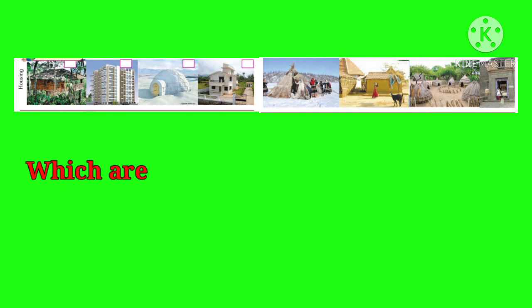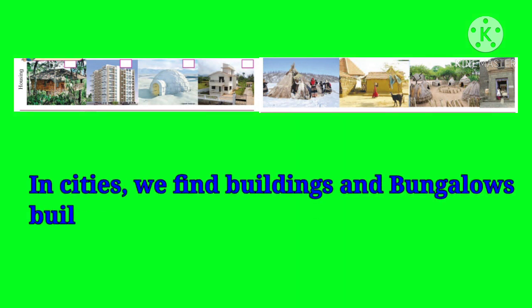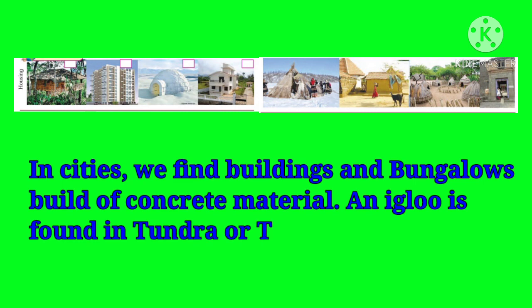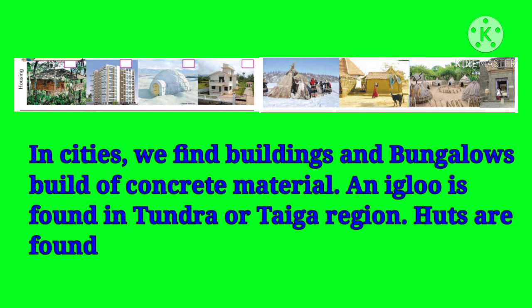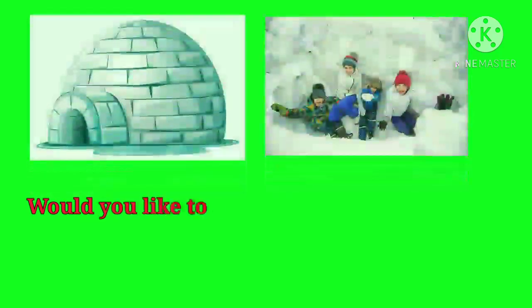Here is the second question: Which are the regions where such types of houses are found? In cities, we find buildings and bungalows built of concrete material. An igloo is found in the tundra or taiga region. Herds are found in the grassland or forested areas.